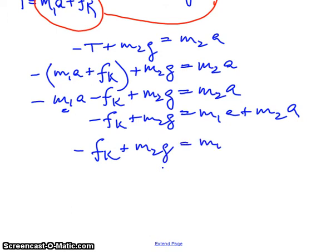And I get minus F sub k plus M2g equals M1 plus M2 times a, and now I want to divide by M1 plus M2, so that I will get A equals M2g minus the friction, kinetic friction, divided by M1 plus M2.